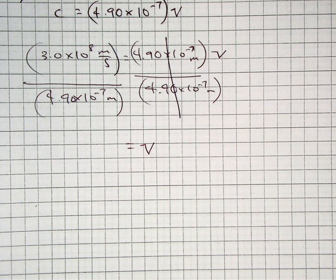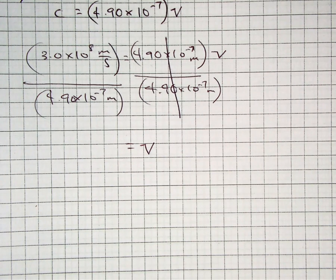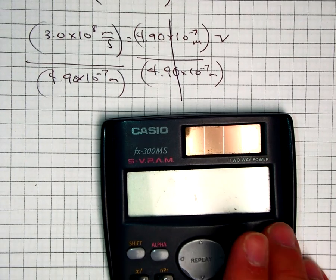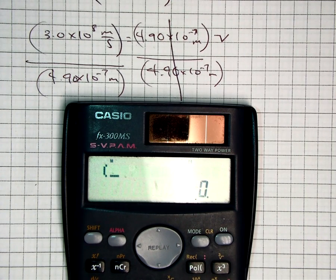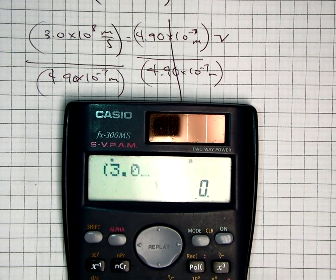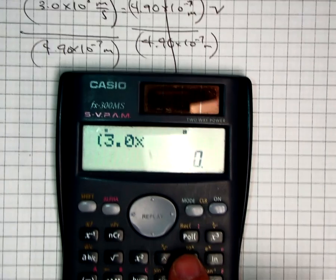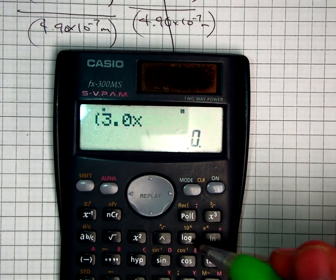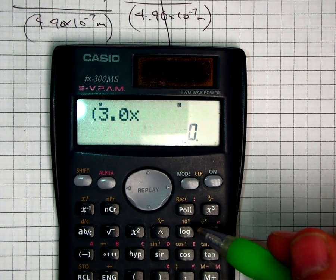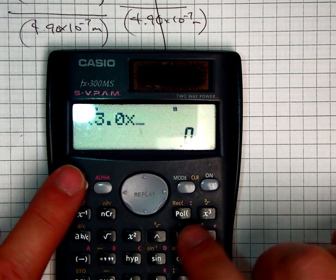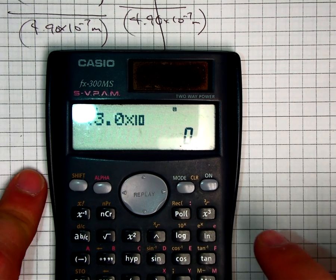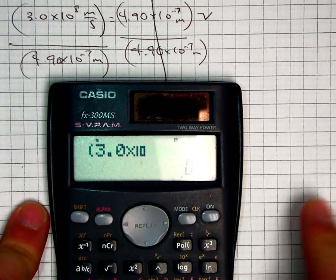Now, depending, everybody in here has a different type of calculator, so it might look a tad different on yours. But here is how I start it. I hit my parentheses key to start it off. I have 3.0 times, and then right here on my calculator, I have a button that says 10X. But to get there, I've got to use the shift button, so I have 3.0 times, shift, 10X to the eighth power.